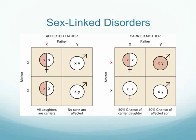Notice the difference with sex-linked disorders. If the father has an affected X and Y, since he has only one X to contribute, none of the sons will be affected, but all daughters will be carriers with one affected X. If the mother is the carrier — with one affected X — and the father is normal, then there's a 50% chance of a carrier daughter and a 50% chance of an affected son.